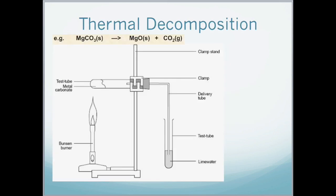Thermal stability relates to the stability of a compound when it is heated. The general trend is that the carbonates and nitrates of group 1 and 2 follow the same pattern. Magnesium carbonate solid, being heated, produces magnesium oxide and carbon dioxide. Sometimes in the exam we might be asked to show how we would carry out a thermal decomposition. We would use a Bunsen burner and a clamp stand which would contain the test tube with the metal carbonate, sealed off, with a delivery tube going into lime water through a test tube.